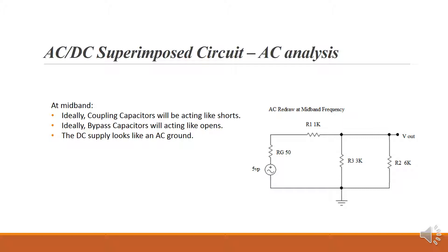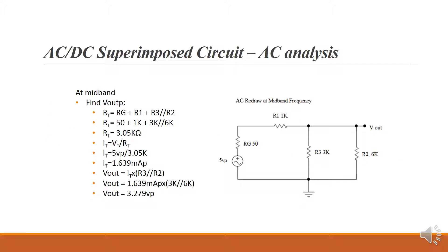Here we can see the AC redraw at mid band frequency. For AC analysis at this point, we can use Ohm's law and calculate Vout peak — keeping it in peak since our generator is in peak. For this example, Vout is 3.279 volts peak for the AC component of the waveform.